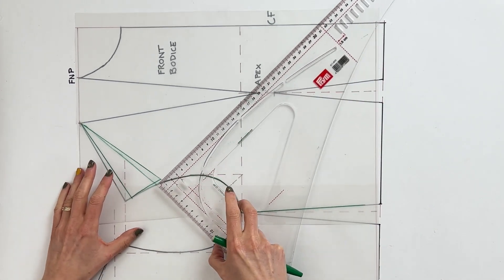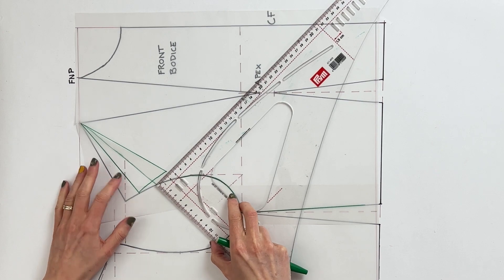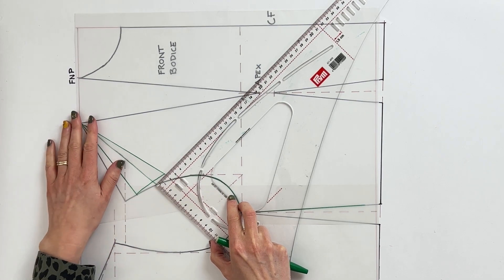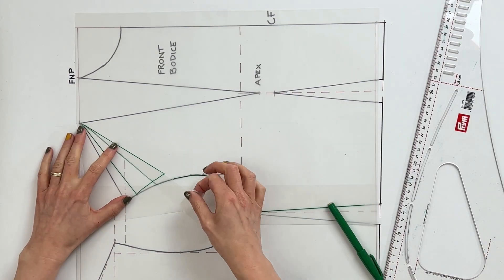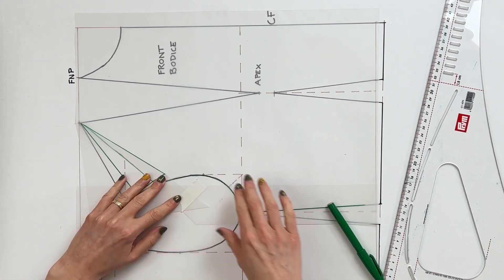Okay, so we want to drop this down by two centimeters. So if we're dropping it down by two centimeters at the armscye it's sitting like that. Grab some masking tape and tape that up there.